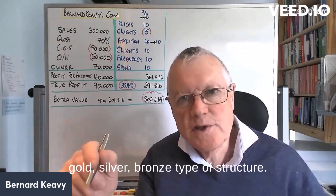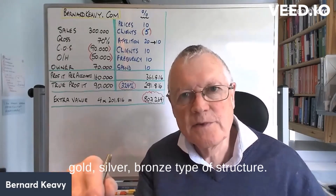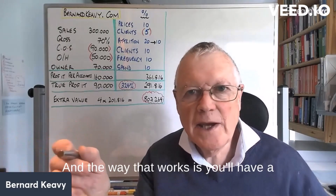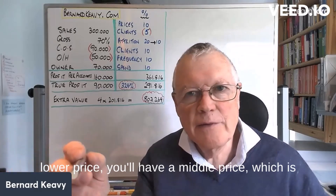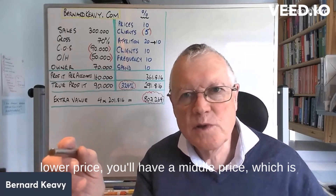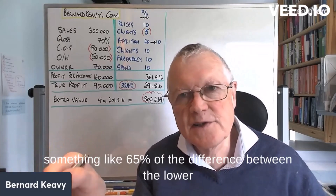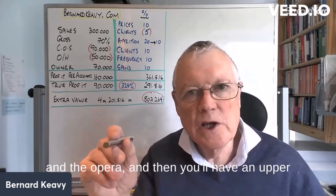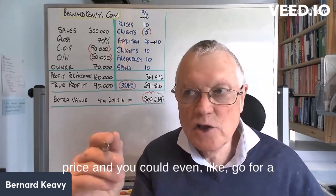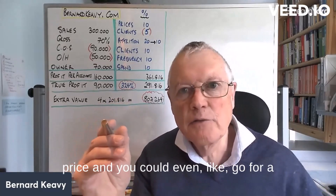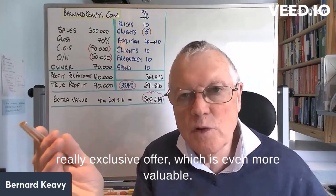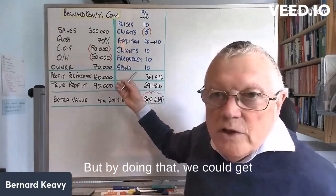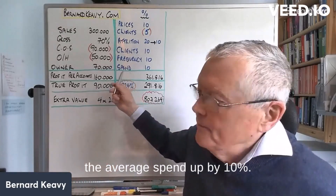We'll also get them to spend more each time. The way we do that is through cross-sells, upsells, and what are known as bundles or packages. We could have a gold, silver, bronze type of structure — it's called differential pricing. The way that works is you have a lower price, a middle price which is something like 65% of the difference between the lower and upper, and then an upper price. You could even have a really exclusive offer which is even more valuable.